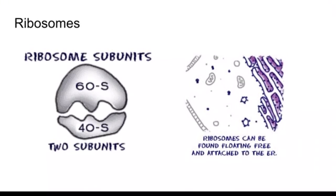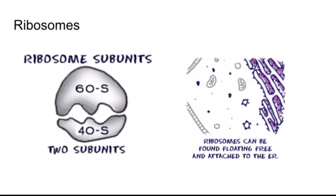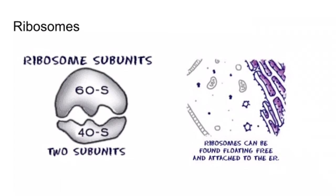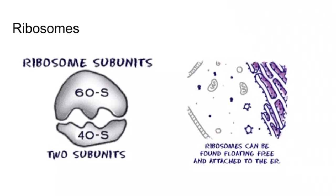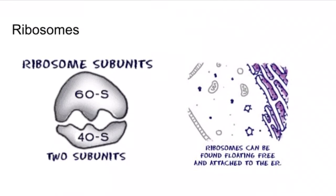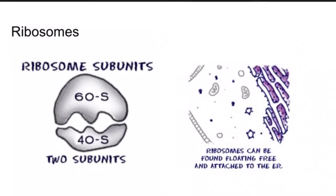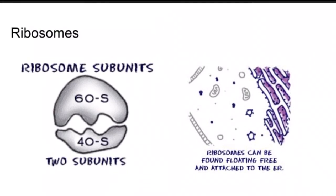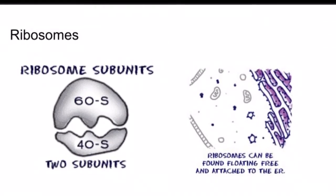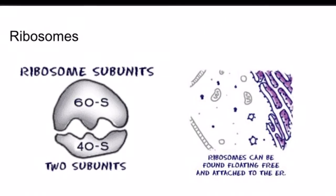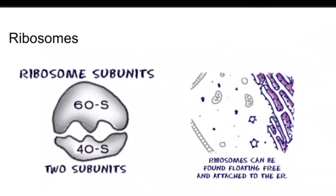Ribosomes are responsible for the production of proteins in living cells. Cells typically contain many thousands of ribosomes. They are an assembly of proteins and ribosomal RNAs. When a cell needs to make proteins, it looks for ribosomes. Imagine they are like construction workers who connect one amino acid at a time and build long chains. What's most special about ribosomes is that they are found in both prokaryotes and eukaryotes.